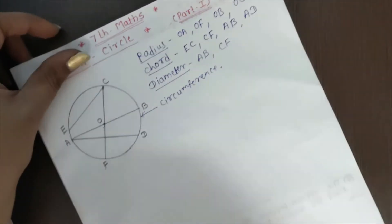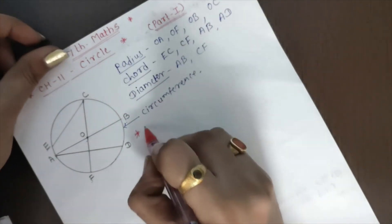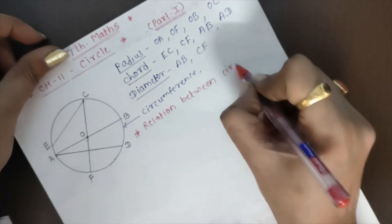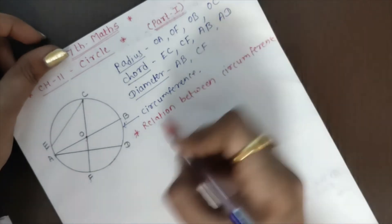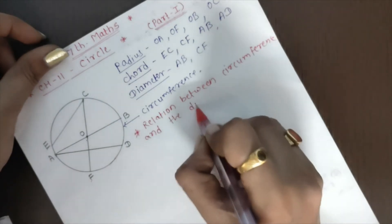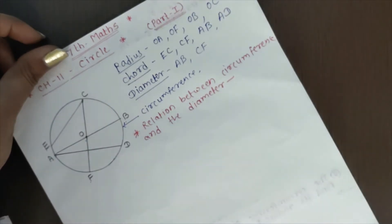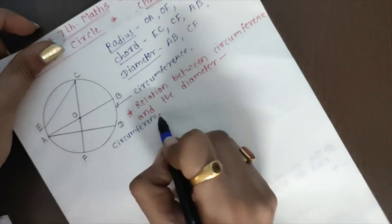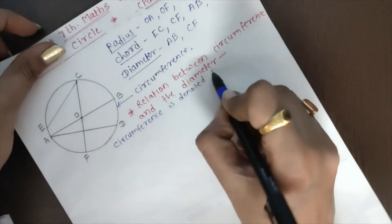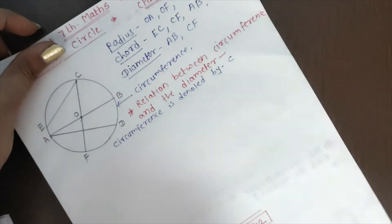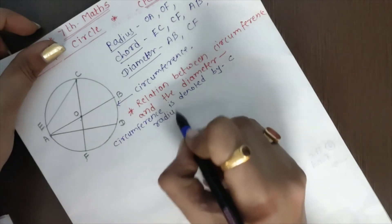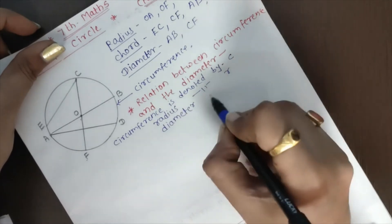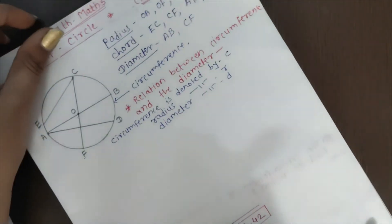So all this is about your circle. Now see, what is the relation between circumference and diameter? First note down this. Circumference is denoted by C, small c. Then radius of a circle, it is denoted by small r. Now diameter is denoted by d, small d.